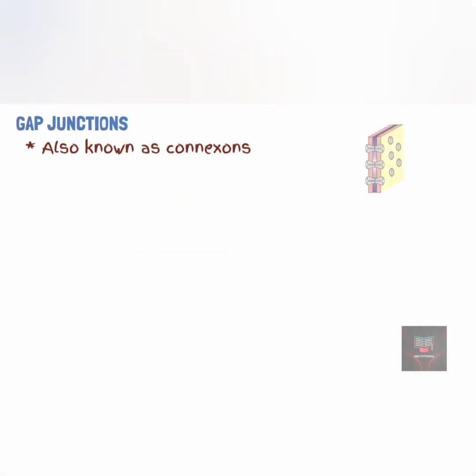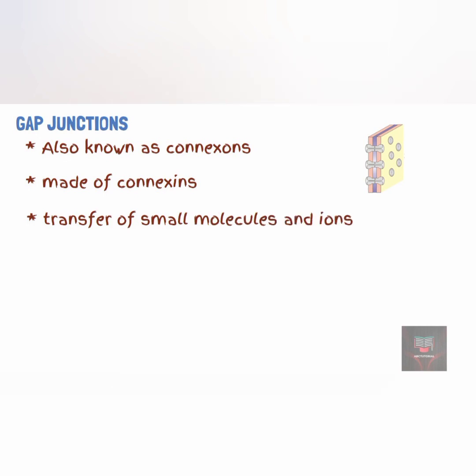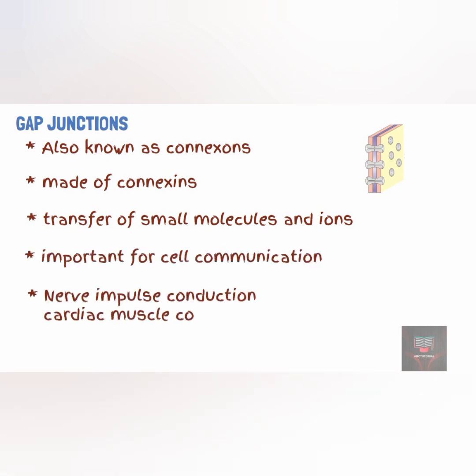Gap junctions are also referred to as connexons, and they are made up of membrane proteins called connexins. They connect neighboring cells together; through the connexons, ions and small molecules can diffuse from the cytosol of one cell to another. Gap junctions allow the cells in a tissue to communicate with one another. They are necessary for future development, for transmission of nerve impulses, and for cardiac muscle contraction synchronicity.